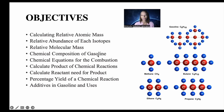Here are different examples of hydrocarbons: methane, ethane, propane, butane. The most common hydrocarbons — methane comprises one carbon and four hydrogen; ethane comprises two carbon and six hydrogen; propane comprises three carbons and eight hydrogen; butane comprises four carbons and ten hydrogen.